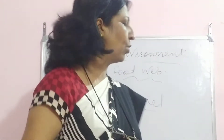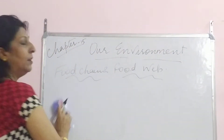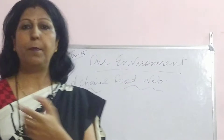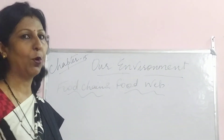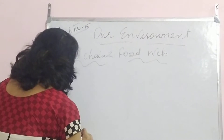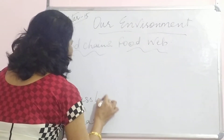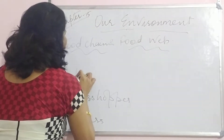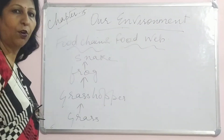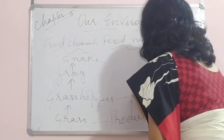Before food chain and food web, let me give you an example. Producers, consumers, and decomposers — consumers are those which feed upon the producers; producers are the plant foods; and decomposers help in decaying matter. Now let's talk about a food chain. This grass is eaten by a grasshopper, the grasshopper is eaten by a frog, and the frog is eaten by a snake.